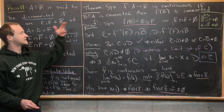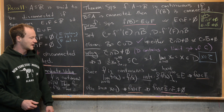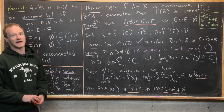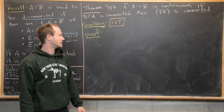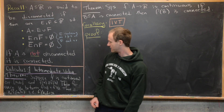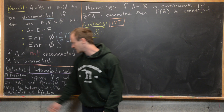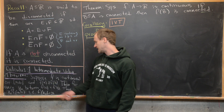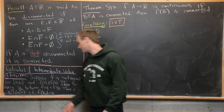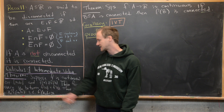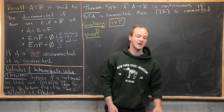In other words, the image of a connected set is connected. Now we're ready to use this general theorem to prove the Intermediate Value Theorem. Recall: if F is continuous on [A, B] and F(A) ≠ F(B), then for every Y₀ between F(A) and F(B), there is an X₀ in (A, B) such that F(X₀) = Y₀.